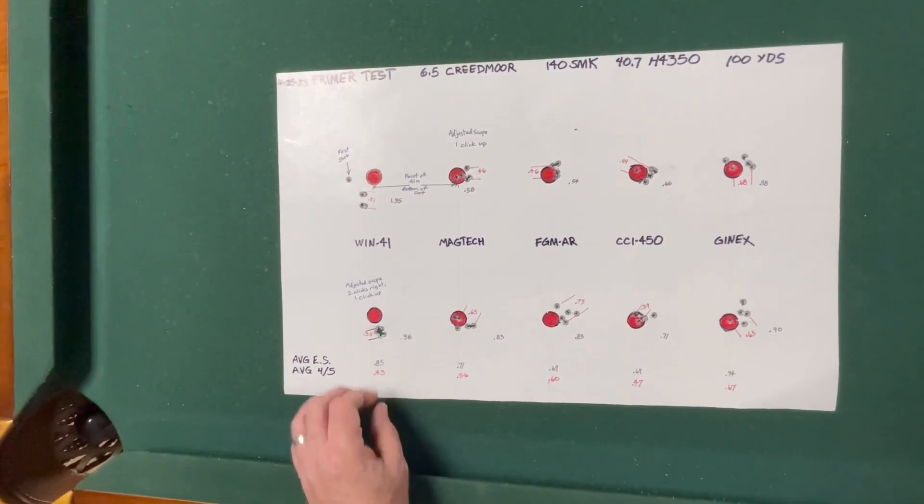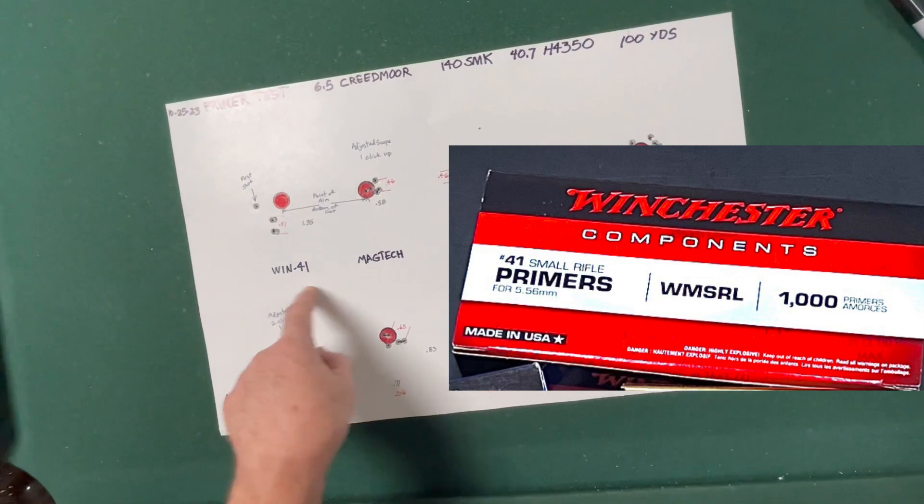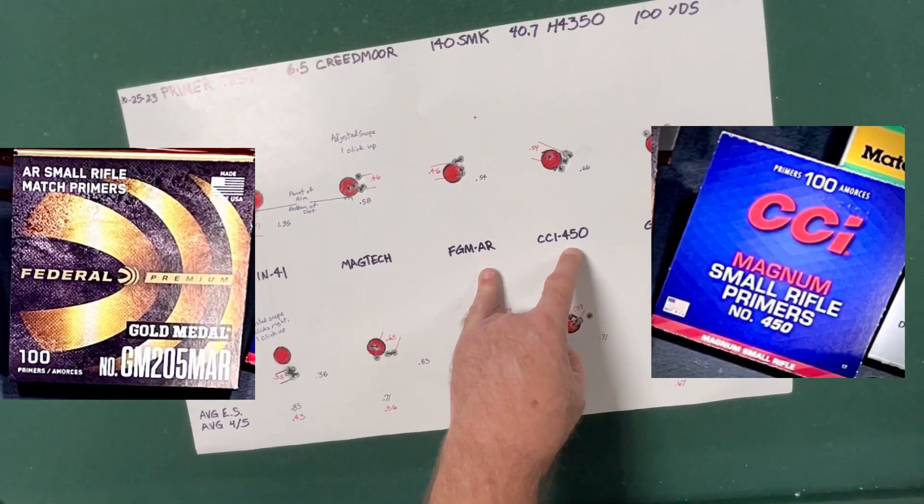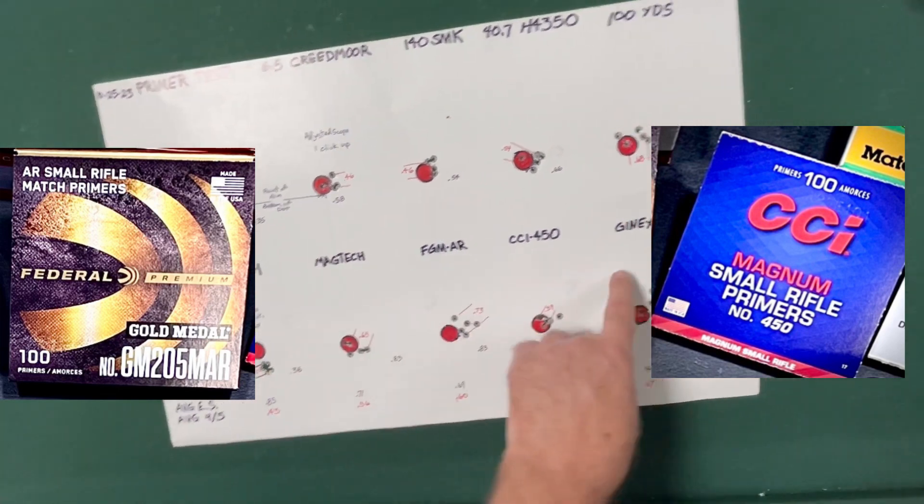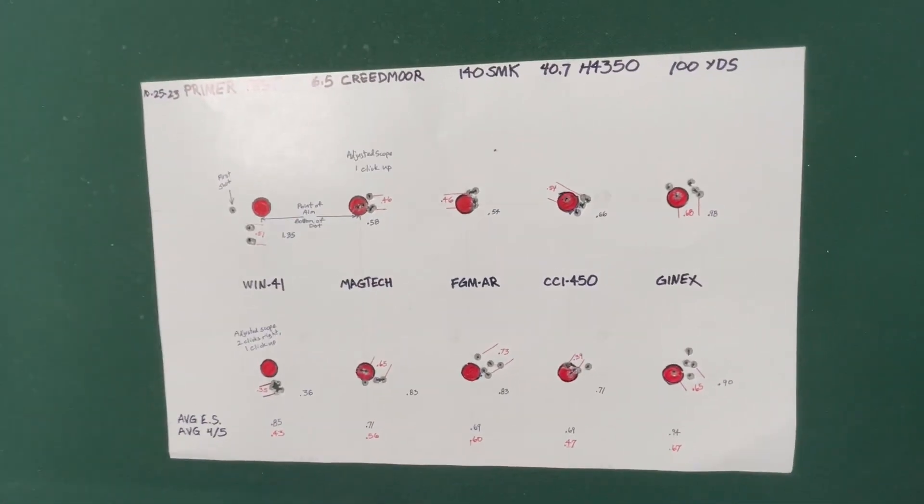I'm probably going to favor the Winchester 41 and the federal gold medal and probably the CCI 450. I've got a box of Magtech, and I've still got a bunch of Gen X to use, but I'll probably use those for plinking ammo.